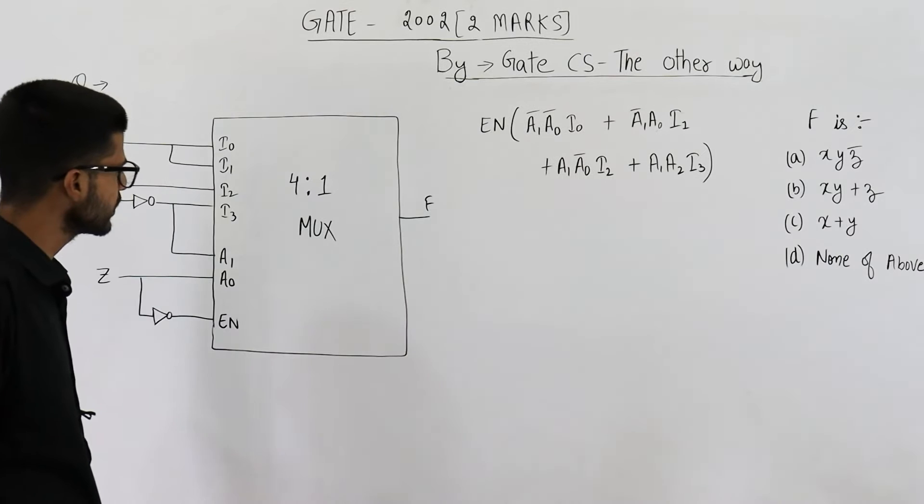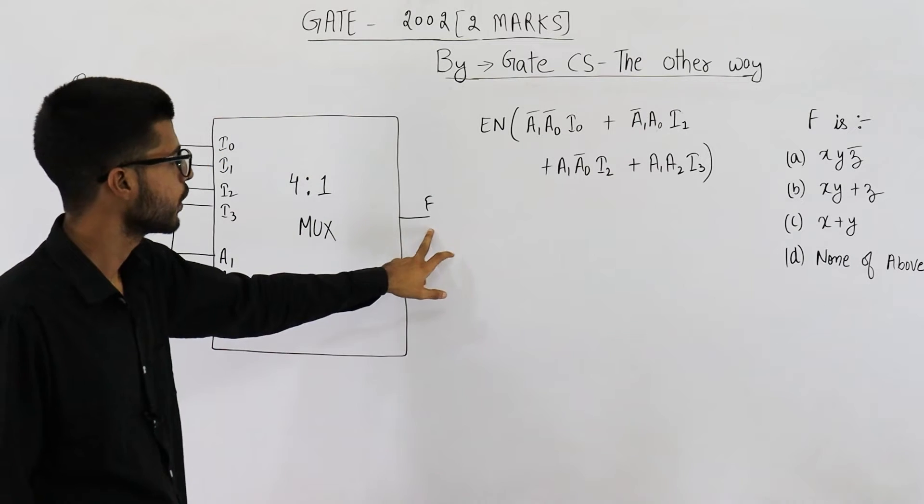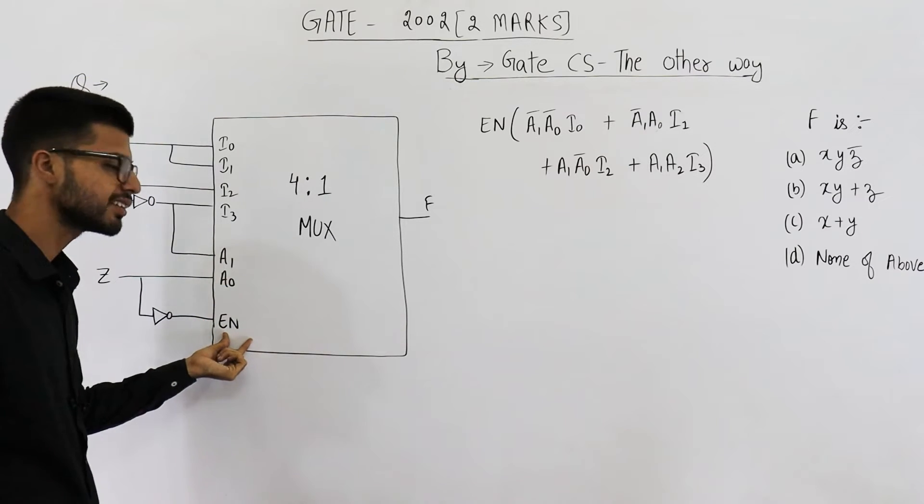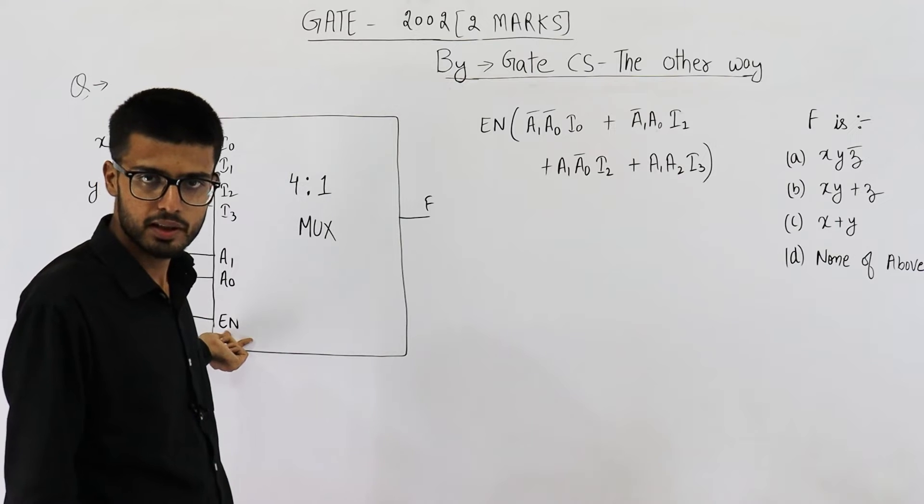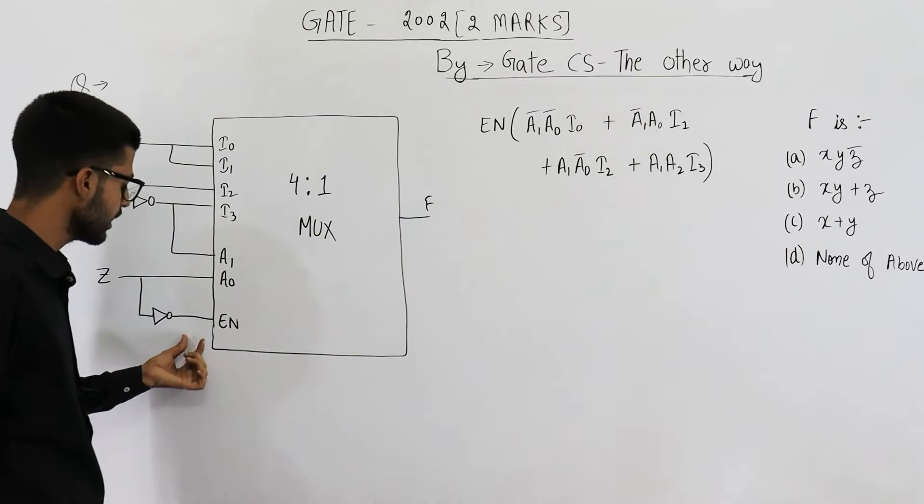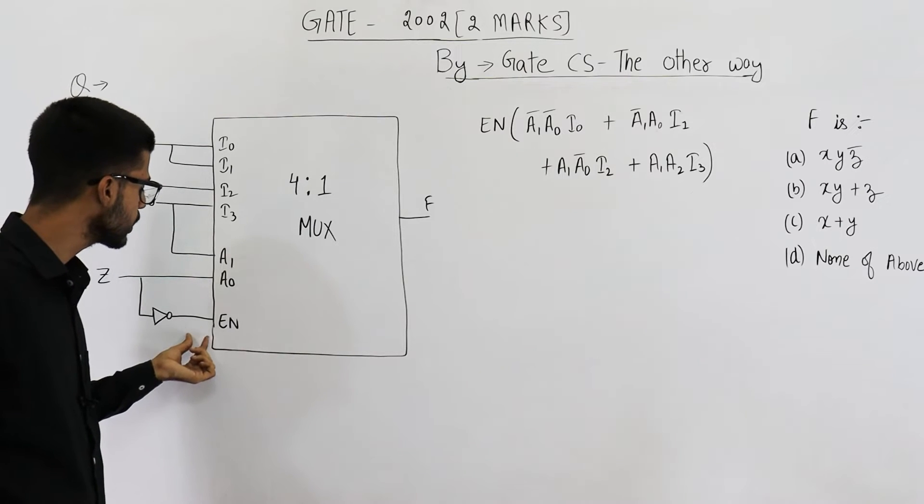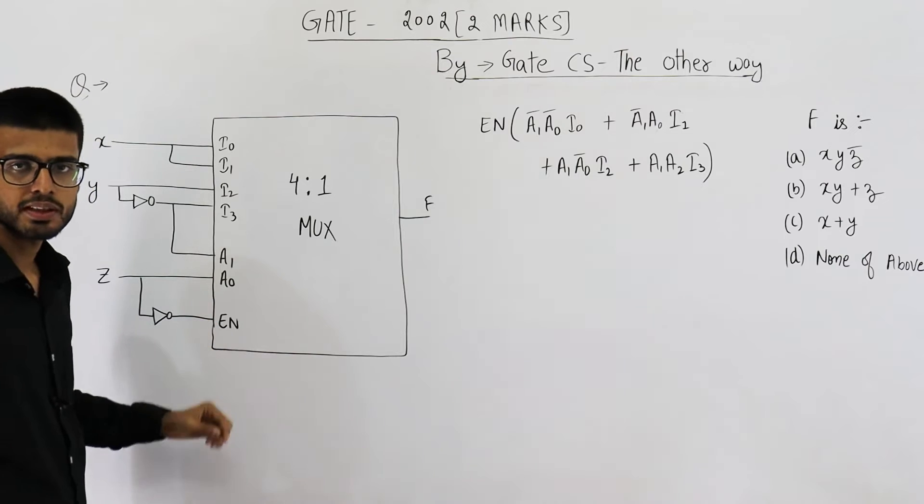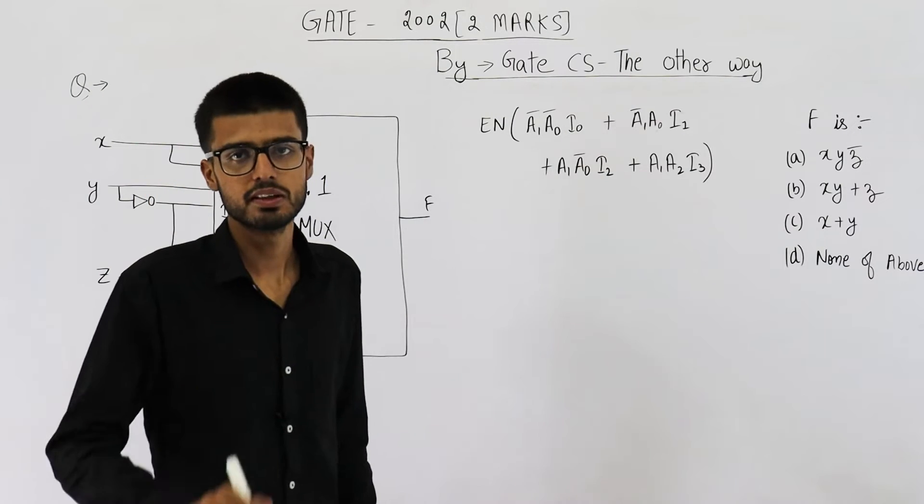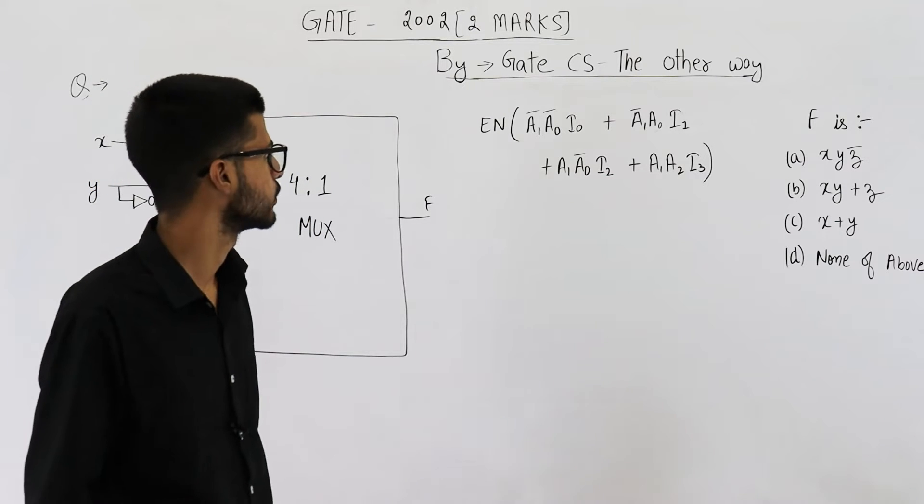Okay, so this one is a 4 to 1 multiplexer. These are the four inputs. You have one output. These are the two select lines A1 and A0. Also, this is a multiplexer with enable signal. That means for output to be one, enable has to be one. The multiplexer must be enabled. If this one is not enabled, that means suppose enable signal is zero. In that case, output will surely be zero. We need not check anything. If enable is zero, simply say output is zero.